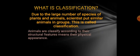First of all, what is classification? Due to the large number of species of plants and animals, scientists put similar animals in groups. This is called classification. Animals are classified according to their structural features, meaning their physical appearance.